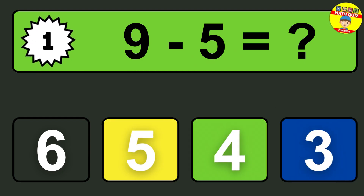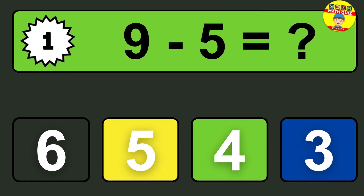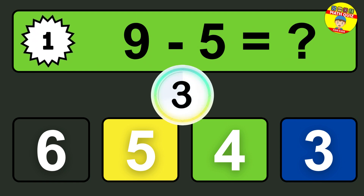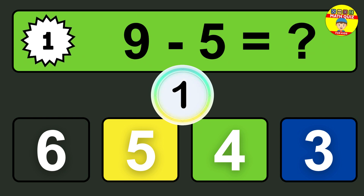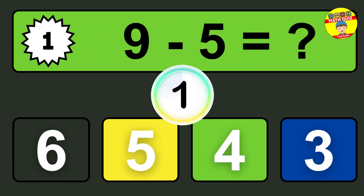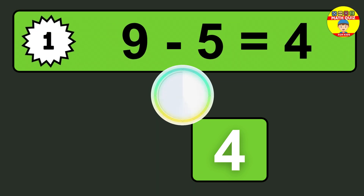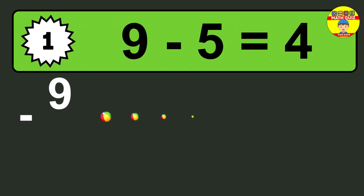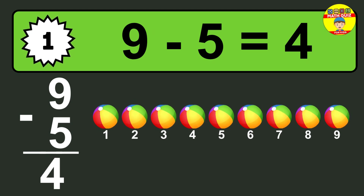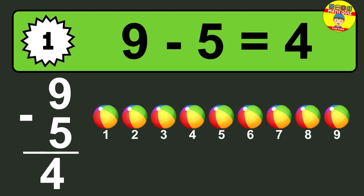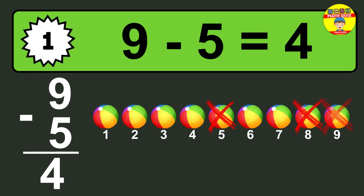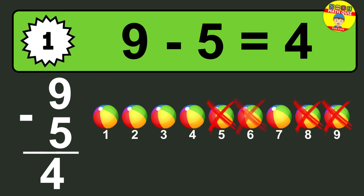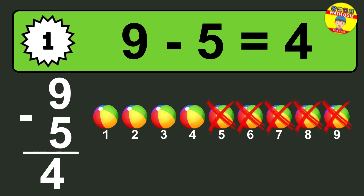Question one: nine minus five equals what? So the answer is nine minus five is four. Let's count it. One, two, three, four.